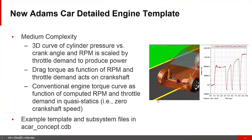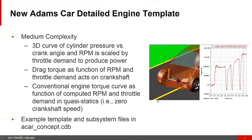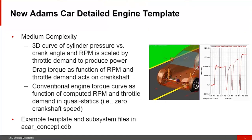In ADAMS CAR, there's a new template showing how to model a more detailed engine — a medium complexity engine model, between what's been in CAR for a long time and a full fidelity engine model like Virtual Engine from FEV. It uses a 3D curve to represent cylinder pressure versus crank angle in RPM, scaled by throttle demand to produce power. It also has a drag torque as a function of RPM and throttle demand acting on the crankshaft, and a conventional engine torque curve for quasi-statics. The engine template can be found in the ACAR concept CDB, with an i4 configuration example.